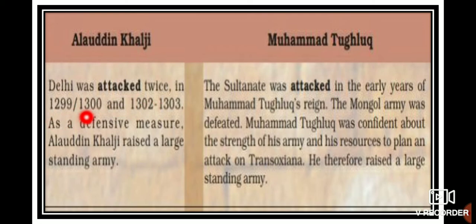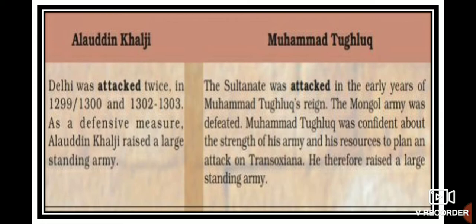Delhi was attacked twice — in 1299-1300 and 1302-1303. As a defensive measure, Alauddin Khilji raised a large standing army. So what Alauddin Khilji did as a defensive measure was to raise a huge standing army.